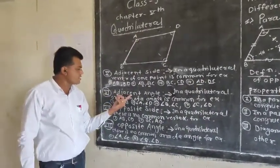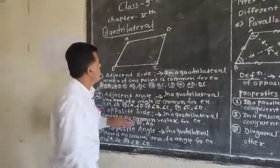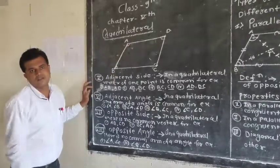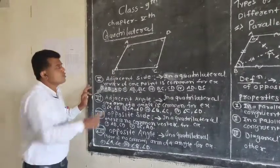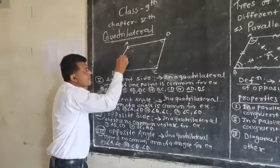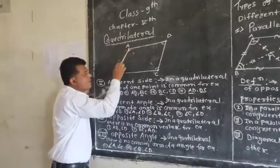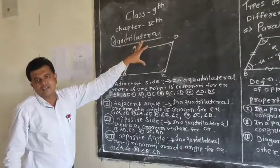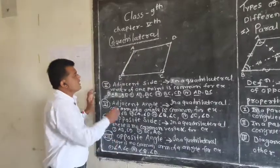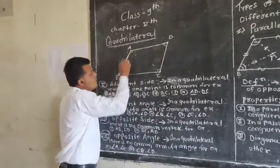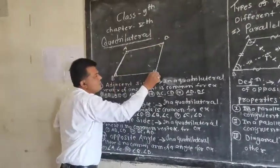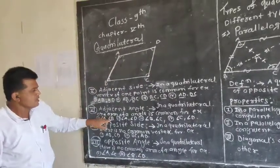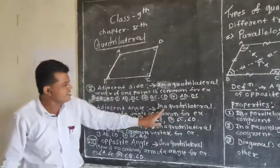Another concept is adjacent angles. In a quadrilateral, adjacent angles share one common arm. For example, angle A and angle B are adjacent angles, and AB is their common side — it is the common arm of the angle.